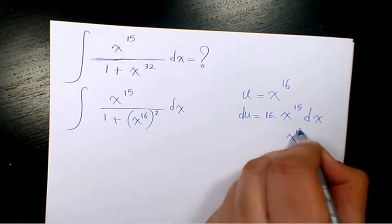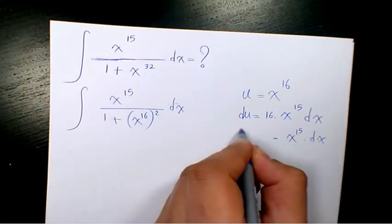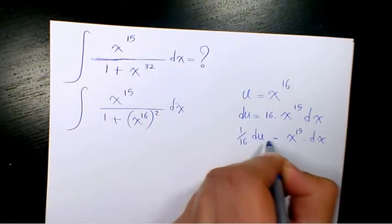So x to the power of 15 dx, which is what you see here, is going to be 1 over 16 du.